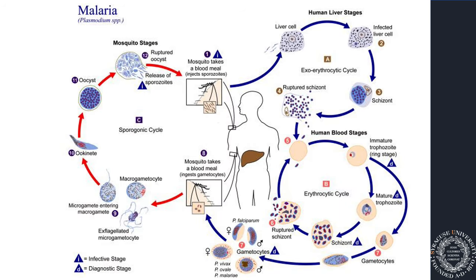The malaria parasite life cycle is incredibly complex. It starts when a mosquito takes a bite. If that mosquito is infected with malaria at the life stage called a sporozoite, those sporozoites enter the bloodstream and find their way to the liver, starting the liver stage. The infected liver cells turn into what's called a schizont, and one cell will produce lots of different parasites.